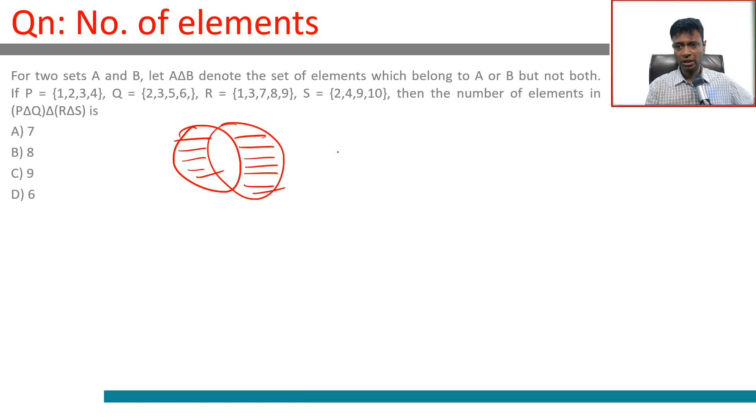Then the number of elements in P triangle Q triangle R triangle S. Let's find P triangle Q first. P triangle Q: this has 1, 2, 3, 4; this has 2, 3, 5, 6. Two and three are common, remove that. P triangle Q is 1, 4, 5, 6. Now worry about R triangle S.